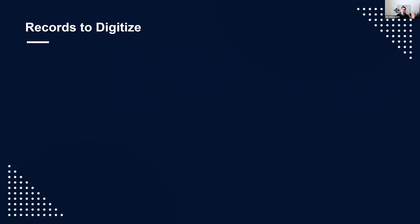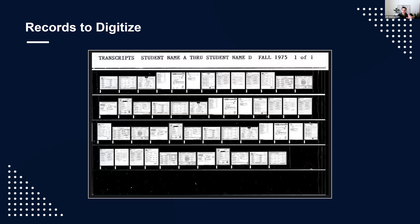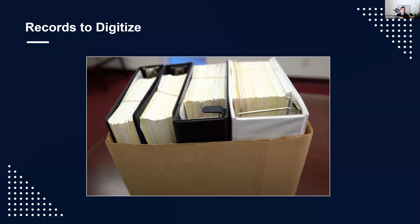Let's get into what records we're going to digitize. The three key records we see in this arena are microfilm, microfiche — and these are fake records, not real student records — and then paper records, which might be binders, single-page transcripts, or different types of files. Film, fiche, and paper are what we see almost every time, though there are a couple of other things you might encounter.